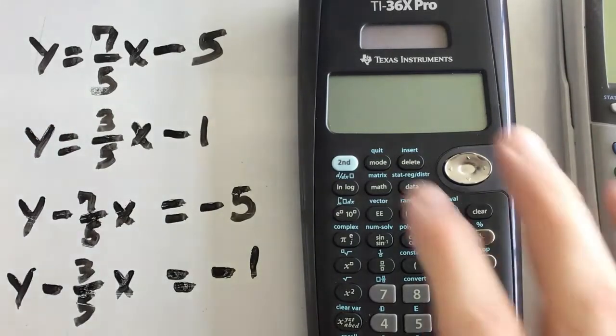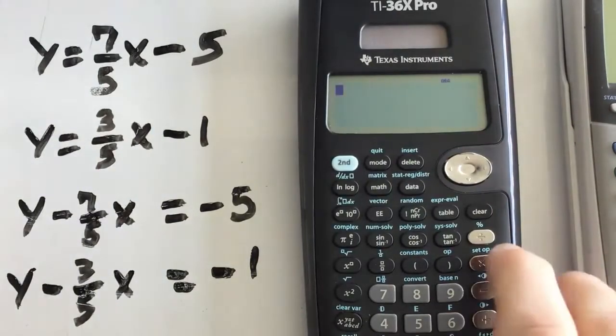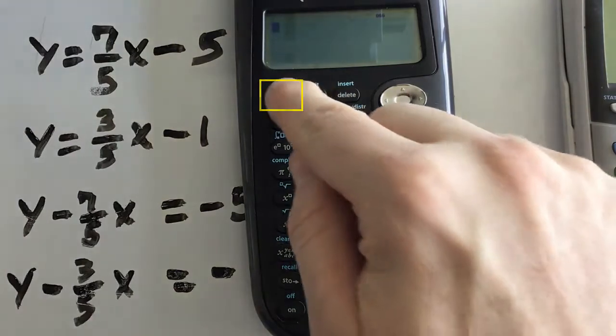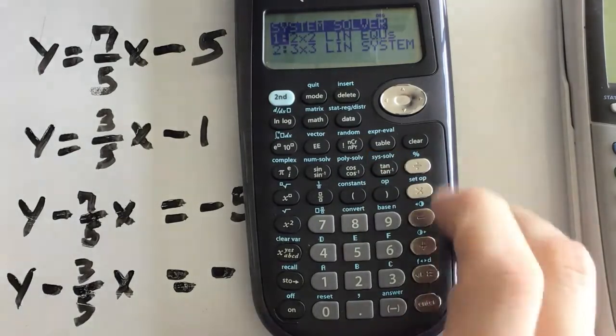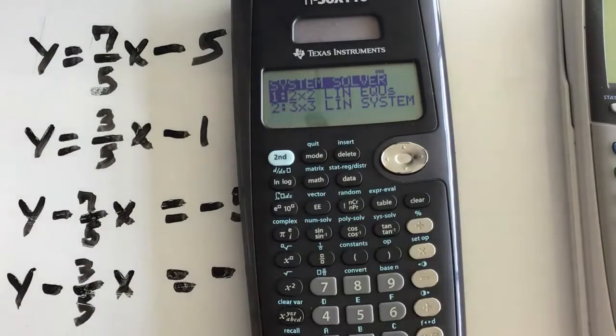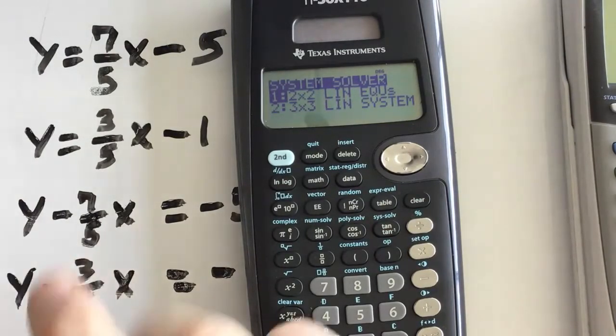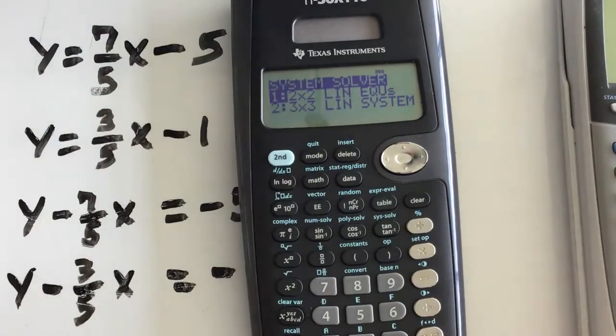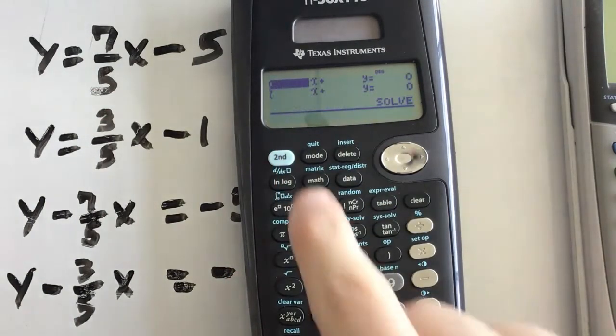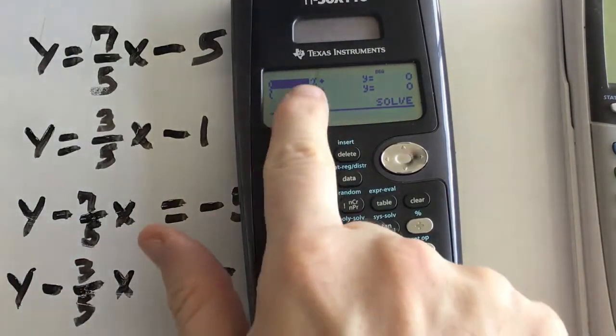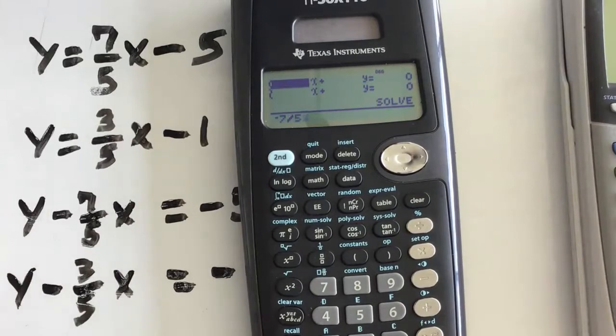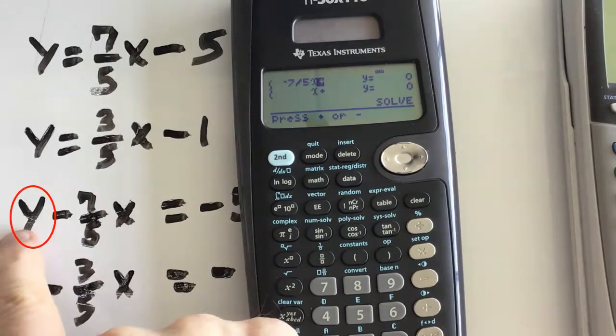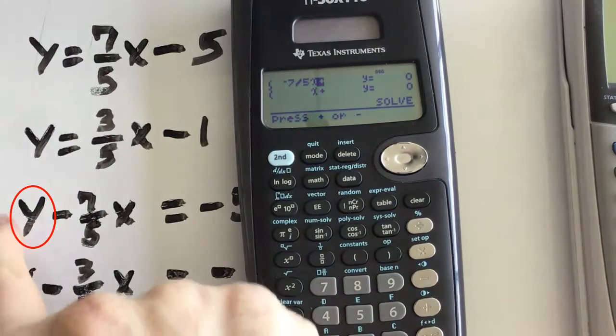And so now to actually solve this with the TI-36X, I'm going to simply use second sys solve right there in blue. By pressing it, it wants to know essentially how many variables we're using. I have an X and a Y, so I have two variables. So I'm going to pick the two by two option. And now I'm simply going to write the numbers in front of each of these variables.